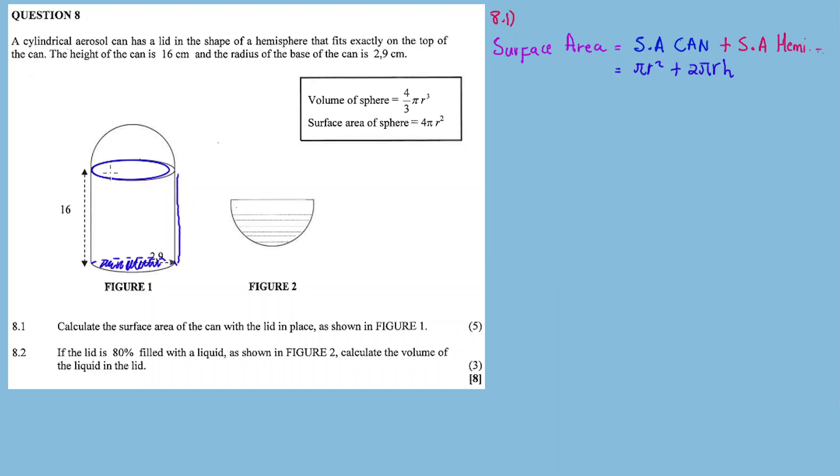It's the circumference of the circle times the height. The height wraps around - if you cut the aerosol can and fold it out...